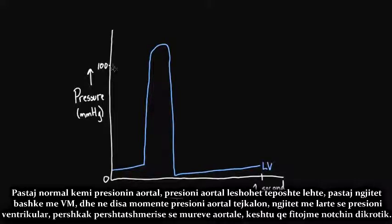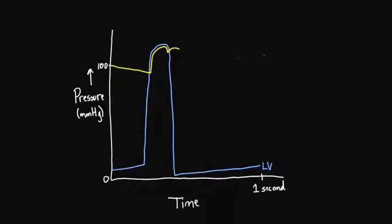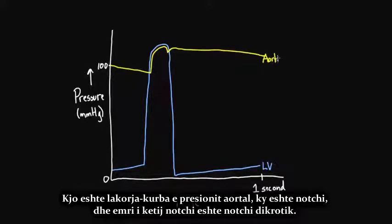I'll put the aortic pressure in yellow. The aortic pressure is actually kind of slowly drifting down, and then it picks up along with the left ventricle and goes for a nice ride. At some point, the aortic pressure actually exceeds — goes higher than — the left ventricle pressure. That's because of the compliance of the aortic walls, and you get this kind of notch, what we call a dicrotic notch. So that's what the aorta is doing — this is our aortic pressure curve, and this is our dicrotic notch.